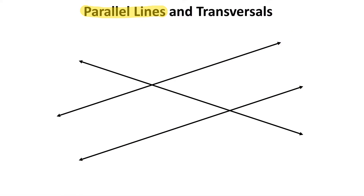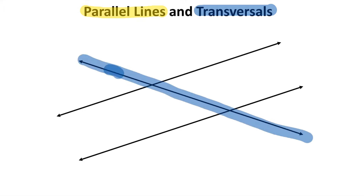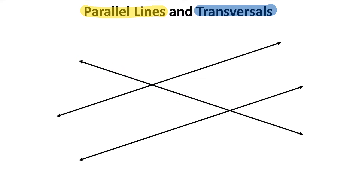Now, a transversal is any line that goes through those two parallel lines. So this line here would be considered a transversal. When parallel lines are intersected by a transversal, some unique things happen with their angles.